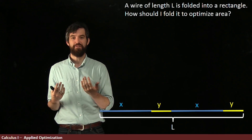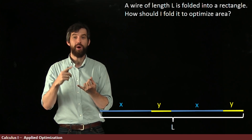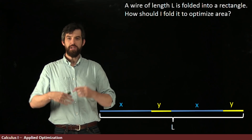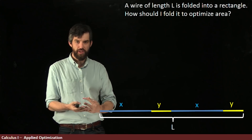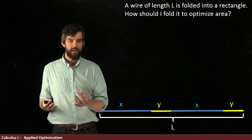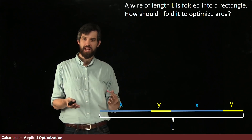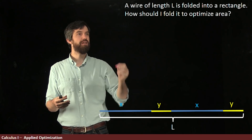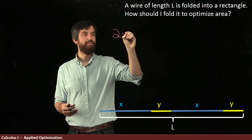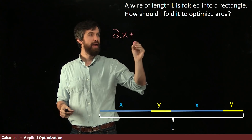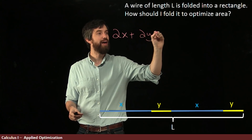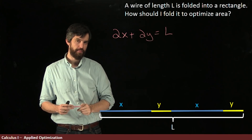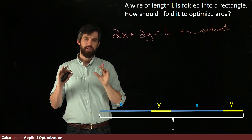I want to figure out what the constraining equation is — what is restricted here — and what is the optimizing equation. The constraint is that the total length of the wire is L. Looking at it, I've got two X portions and two Y portions, so the constraint is: 2X + 2Y = L. That's what is restricted here.